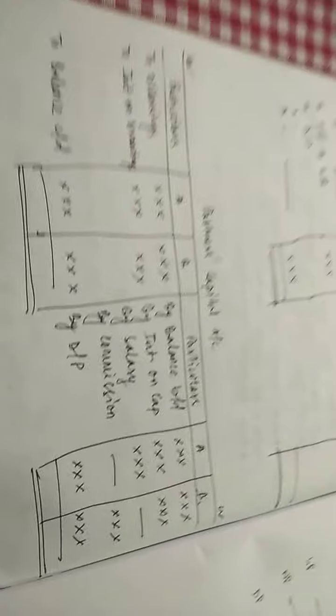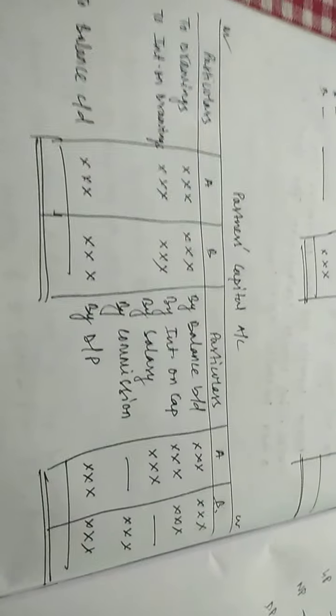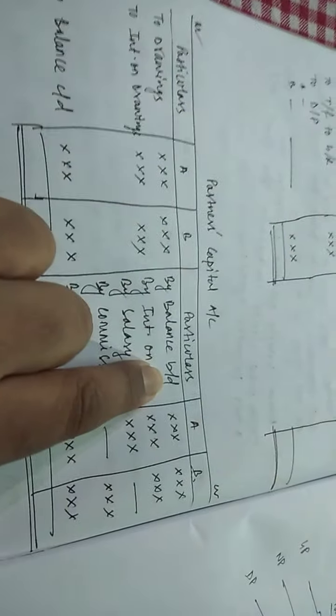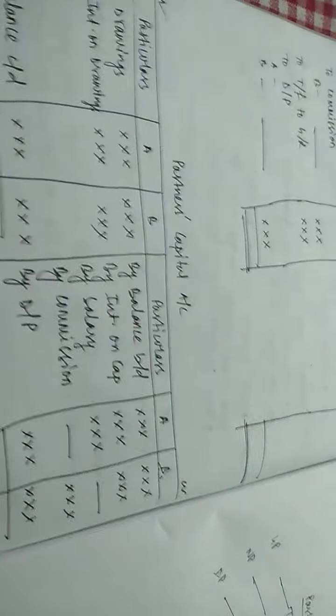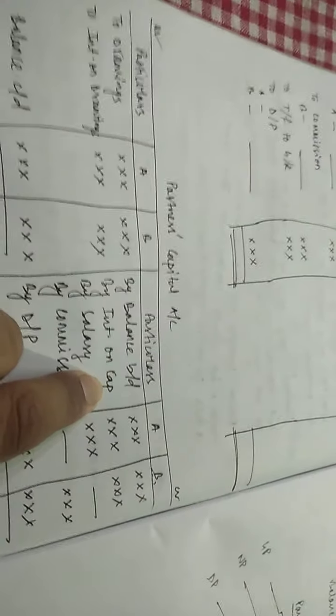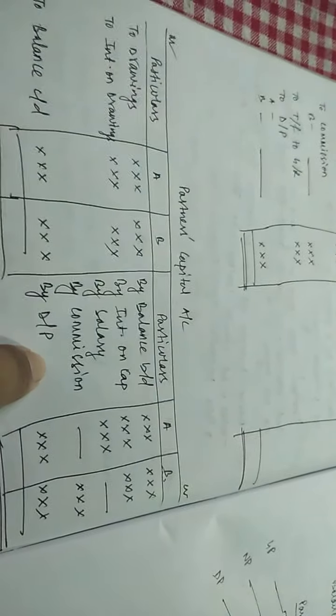Similarly, the divisible profit — the profit being transferred to the partners — goes to the partners' capital account. Now we will also see how a partner's capital account is prepared. It has the same format but with double columns since we have assumed there are two partners. If there were three partners, we would make three columns on both sides. Here we have balance b/d on the credit side — this is the balance of the capital account of the partners. Such balance b/d has not appeared in the profit and loss appropriation account, but in the partners' capital account we have balance b/d at the beginning. Then interest on capital, salary, commission, and divisible profit — all the items that appeared on the debit side of the P&L appropriation account will appear here also.